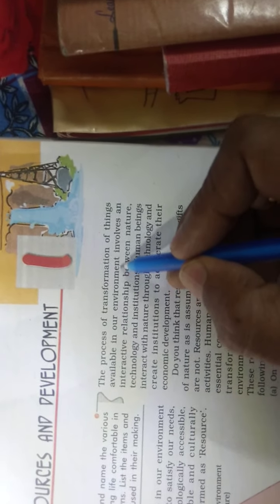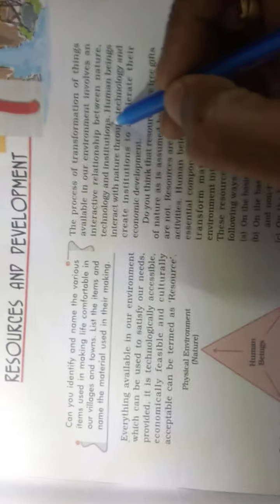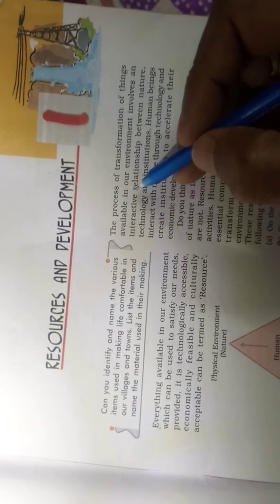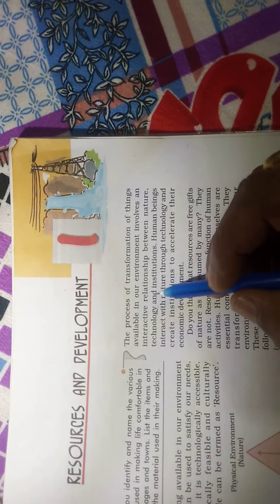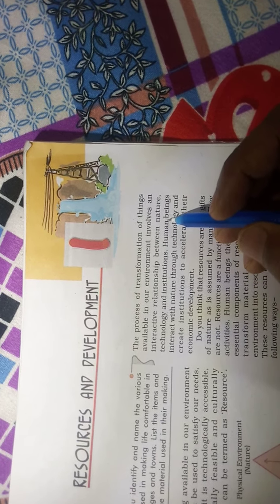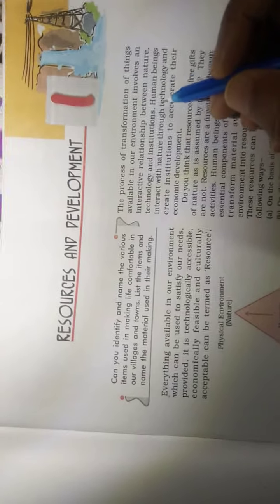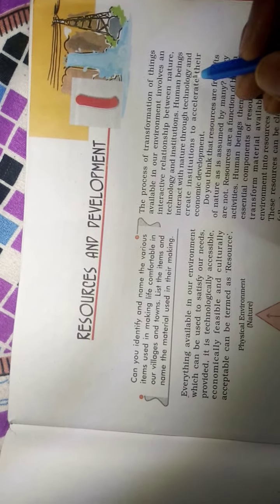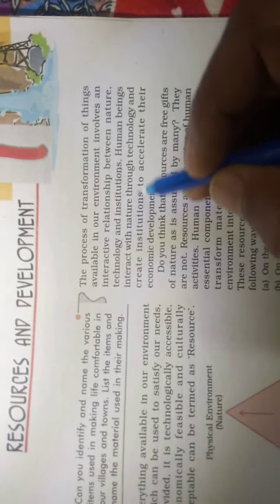The process of transformation of things available in our environment involves an interactive relationship between nature, technology and institutions — it is a process of transformation of things. If there is an interaction between nature, technology and institutions, then we can do economical development. Human beings interact with nature through technology — they have developed technology and with the help of that they interact with nature.